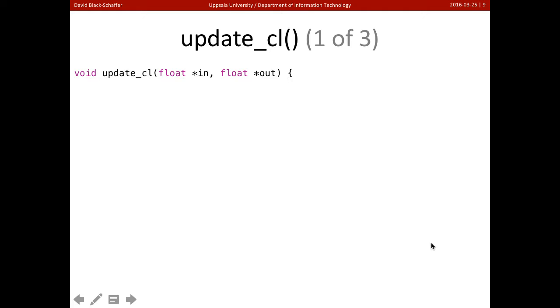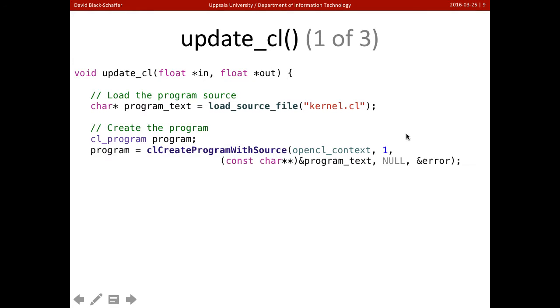Okay, let's take a look at what's in UpdateCL. So UpdateCL is going to take in the data that we want to process, just the in and out. Remember, this is being called by our C code. The first thing it's going to do is it's going to load the program from a file, and this is the kernel that we're going to execute.